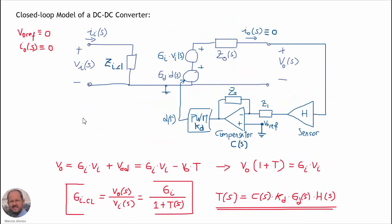We could also have used the equivalent circuit to obtain the audio susceptibility in closed loop. Here we show again the sensor to measure the output voltage, the compensator, the gain of the PWM circuit, and then the control-to-output transfer function. In this case we make null the reference voltage, the perturbations coming from the reference voltage, and also the perturbations coming from the output current — so this is with output current equal to zero, operating with the output in open circuit. We can get exactly the same equations and the same expression for the audio susceptibility in closed loop.